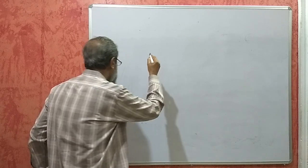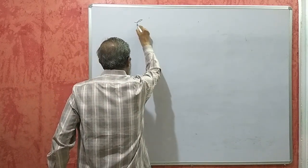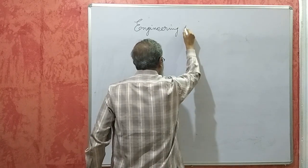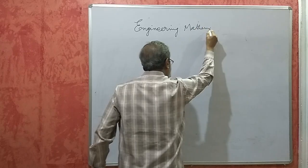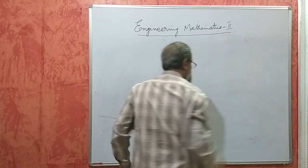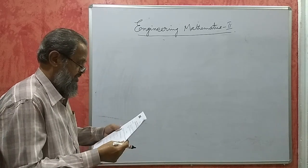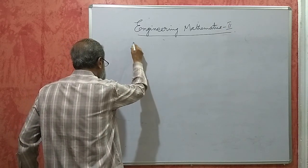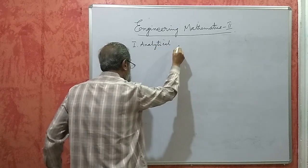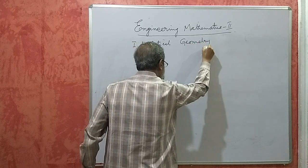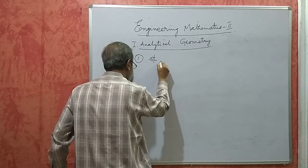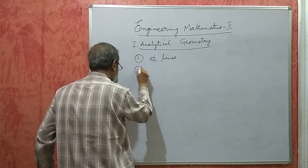Friends, today we are going to learn — this is the first clip in the subject Engineering Mathematics 2. In this subject, the first part is analytical geometry, which consists of two chapters: the first one is straight lines, and the second is conic sections.